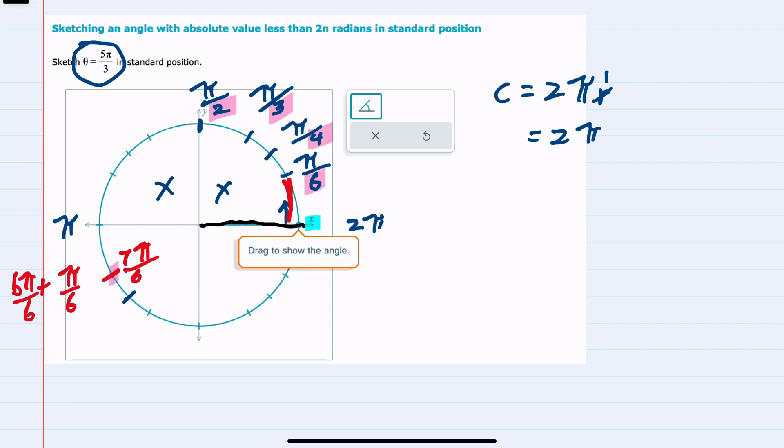Our next one, we would take the π and add π fourths to get to this value. π plus π fourths, again getting a common denominator would be 5π fourths. Still not far enough around to be our 5π thirds. If we keep going, the next one we're now adding π thirds to get from π all the way around to this one. Here our π plus π thirds is now 4π thirds. Still not to the one that we want.